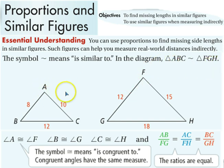We know that angle A and angle F are congruent, angle B and angle G are congruent, angle C and angle H are congruent. And we know that side AB and side FG are in the same proportion as AC, FH and BC, GH. All three of those ratios are equal to each other.